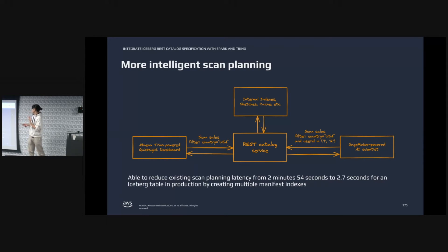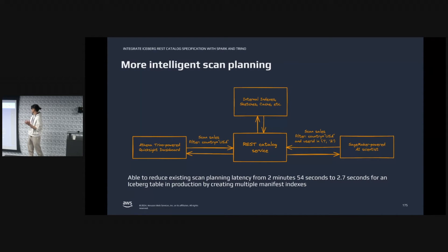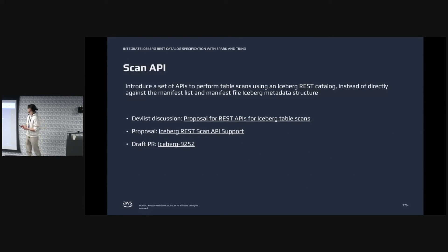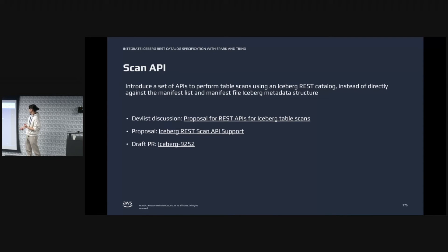We experimented with that and it worked. We also tested scan planning with additional indexes on one of the largest tables in Amazon. As you can see, a normal scan planning takes almost three minutes to complete, and we are able to reduce the time to just three seconds by providing different kinds of manifest indexes. In order to achieve that, we ended up adding a scan API in the REST catalog — essentially moving the manifest list to manifest scan planning logic to the service side, so we can apply more optimizations behind the scenes, although the user is still using the REST catalog client. We've posted dev-list discussions, proposals, and a draft PR, and we've seen consensus and are moving forward with the actual implementation.